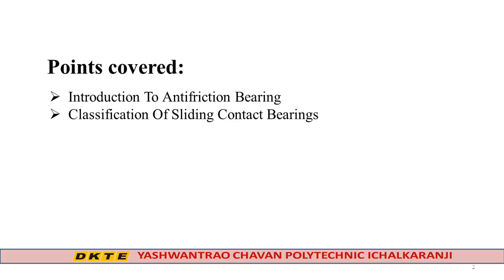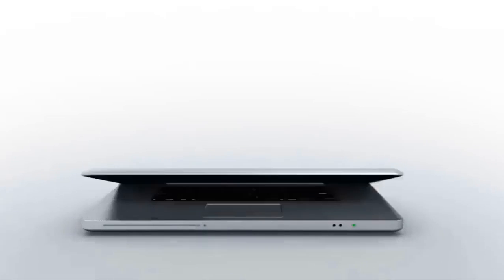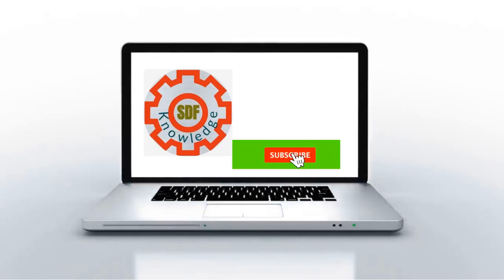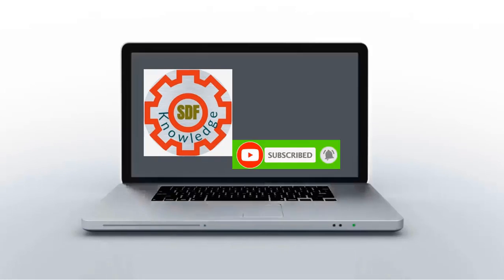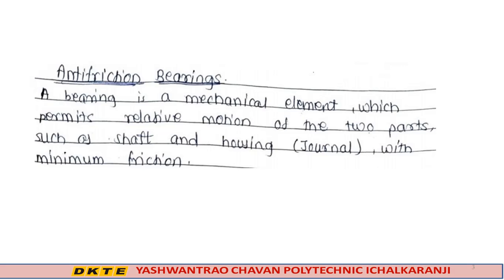There are two types of bearings: sliding contact bearing and rolling contact bearing. A bearing is a mechanical element which permits relative motion between two parts such as a shaft and housing, with minimum friction.